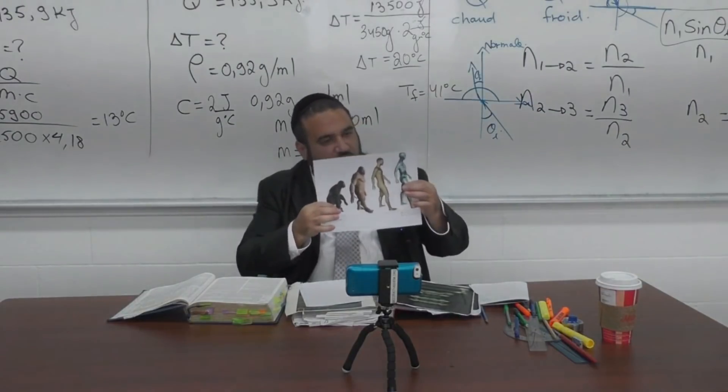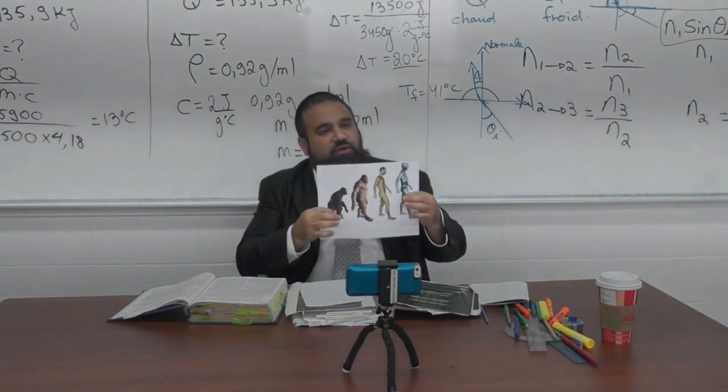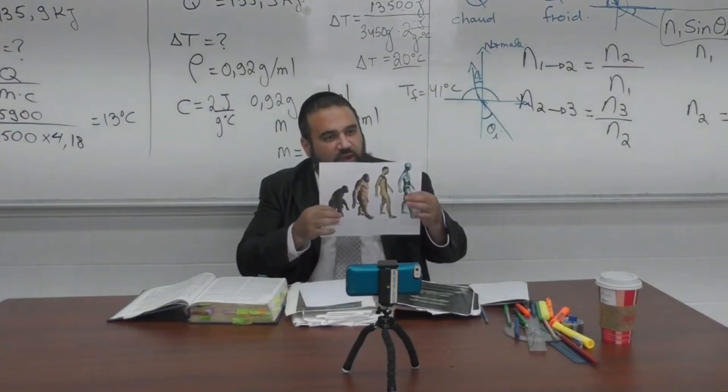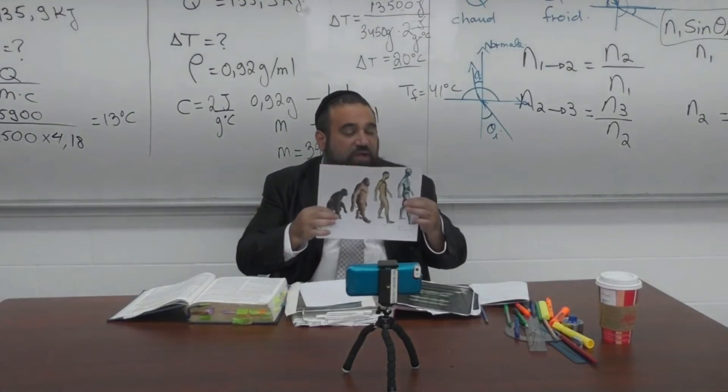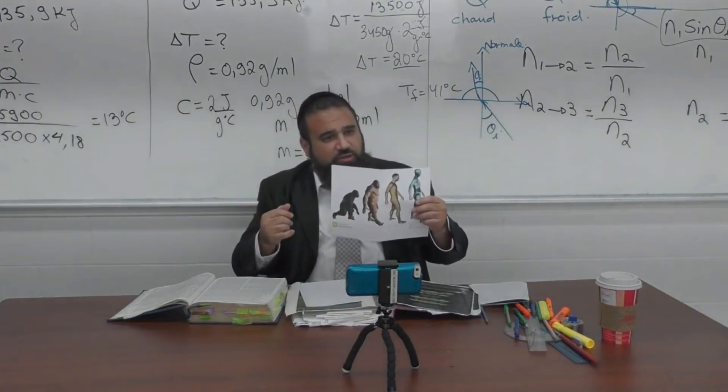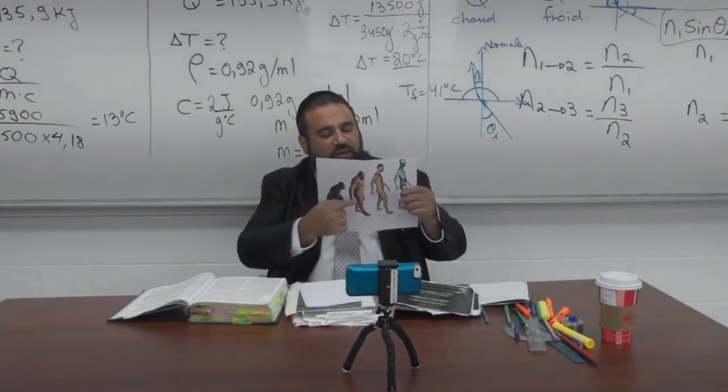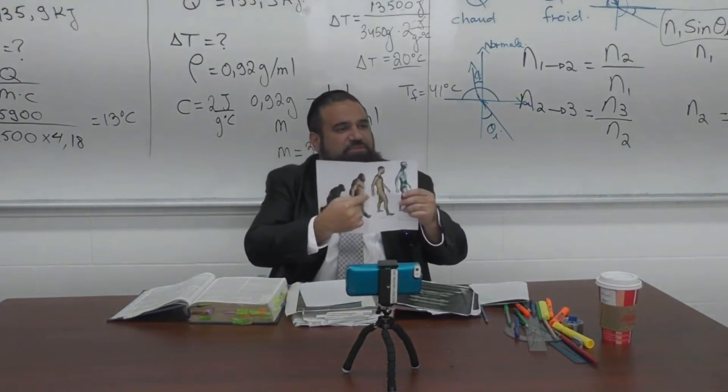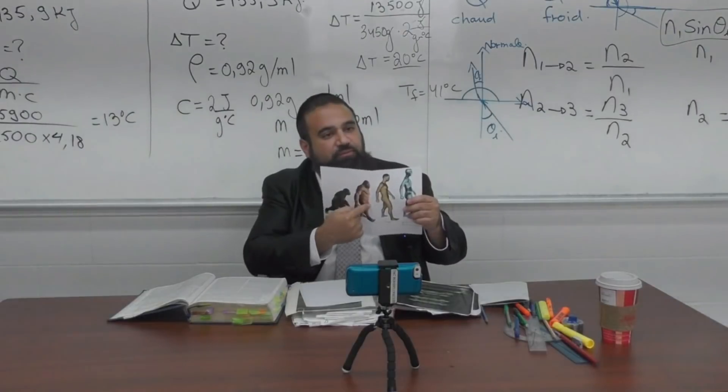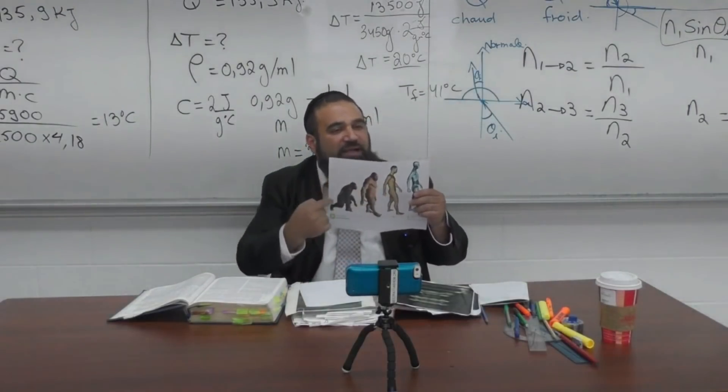The point being, rabbotai, is that if the monkey is real, he's the first step and we are the last step, you'd have one of two things happen here. Number one, the monkey wouldn't be here. Number two, even if the monkey is so strong as a being that he would still be here, all of the different steps in between would also be here.